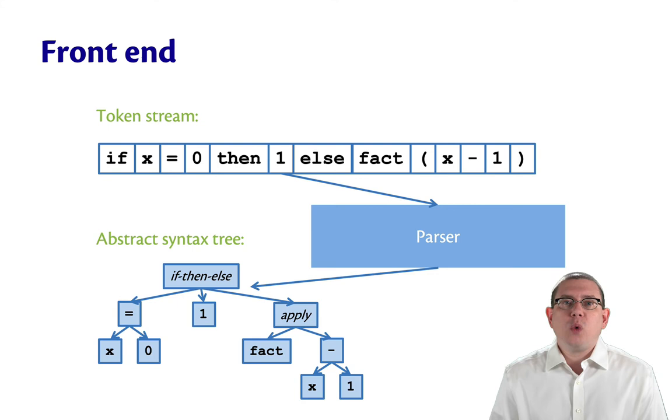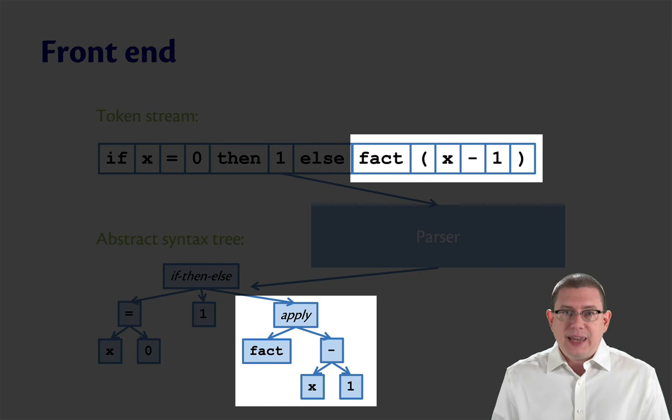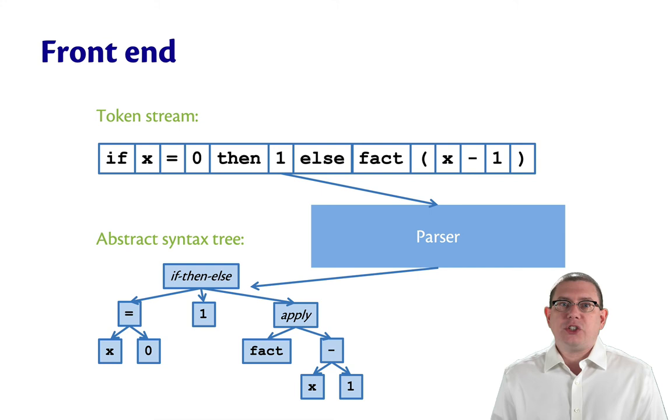Now notice one really interesting thing that happens here with parsing. We got rid of the parentheses. They were there in the token stream to indicate exactly how we wanted the code to be parsed. We wanted fact to be applied to the entire sub-expression x-1, not just to x, which is why we had to write the parentheses. Well the tree implicitly represents that grouping with that sub-expression by having the minus x and 1 as a subtree of the apply, rather than just x. So part of the job of parsing is to recognize how the programmer wanted to group expressions, and then put them into the tree appropriately.